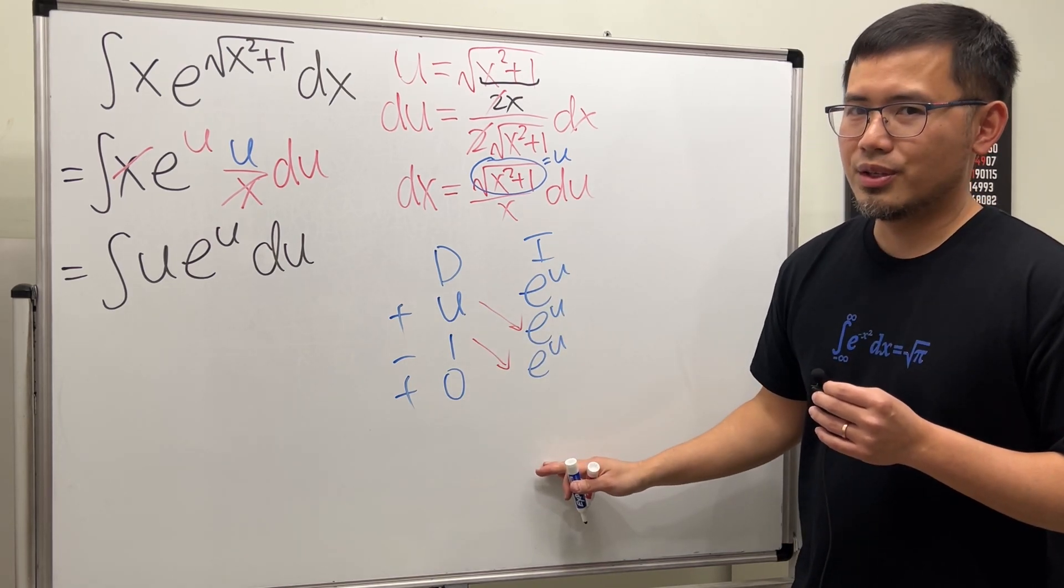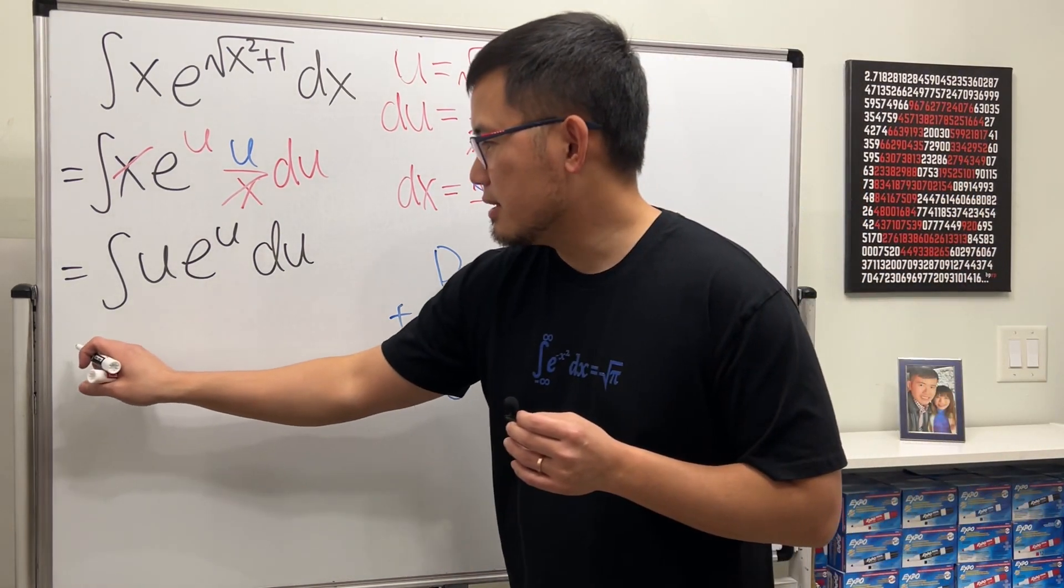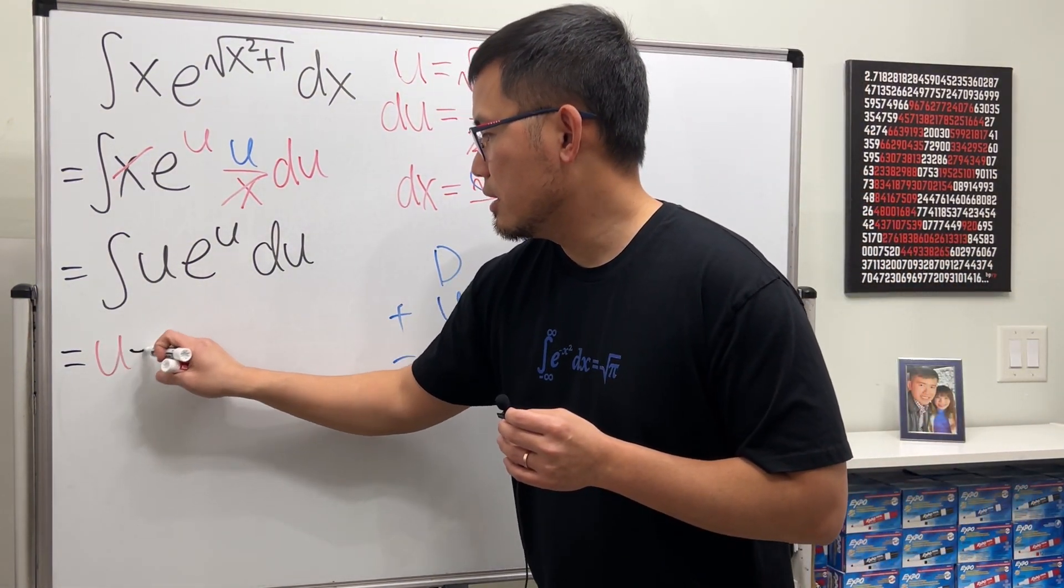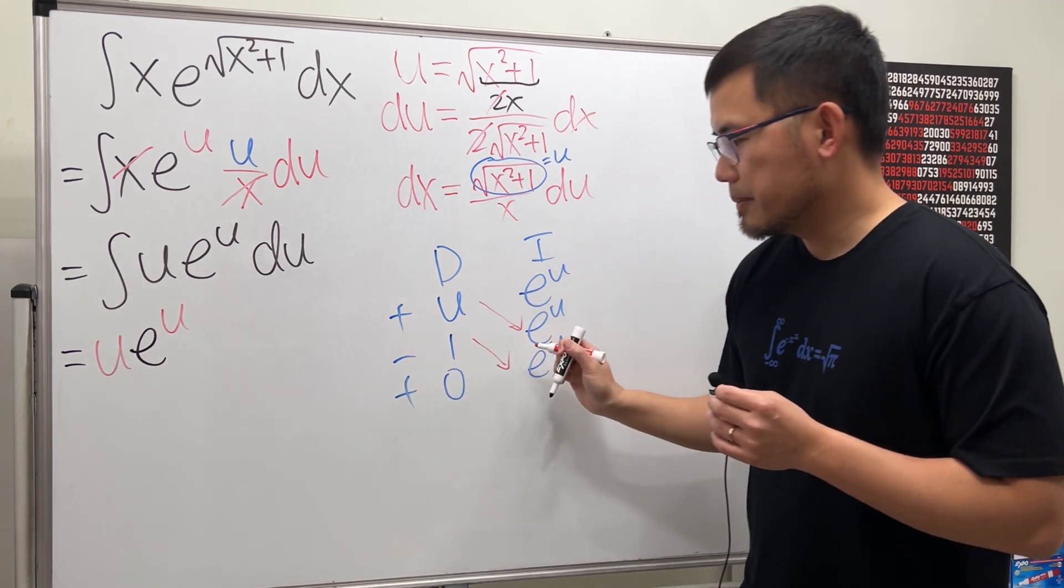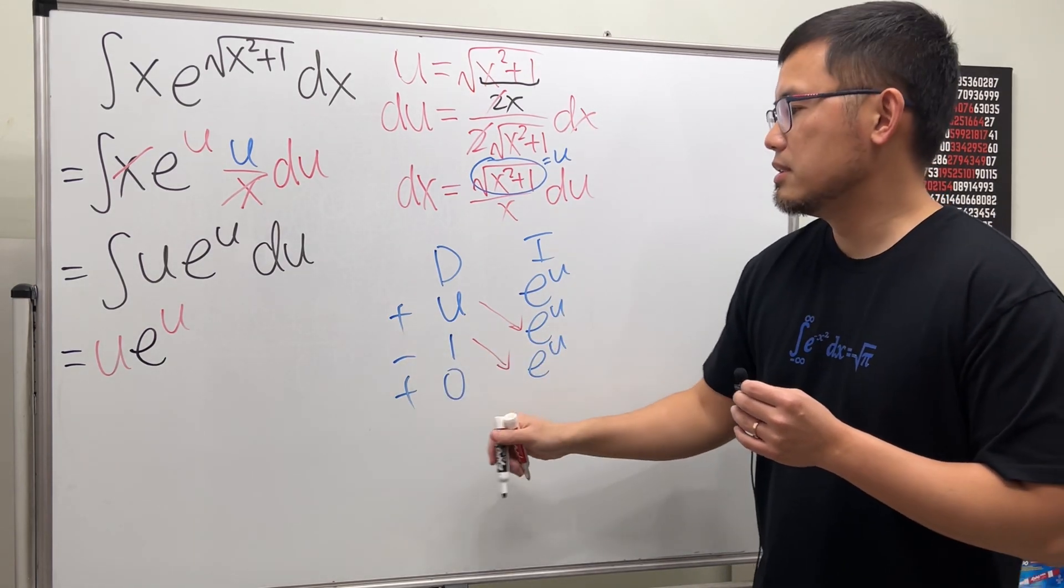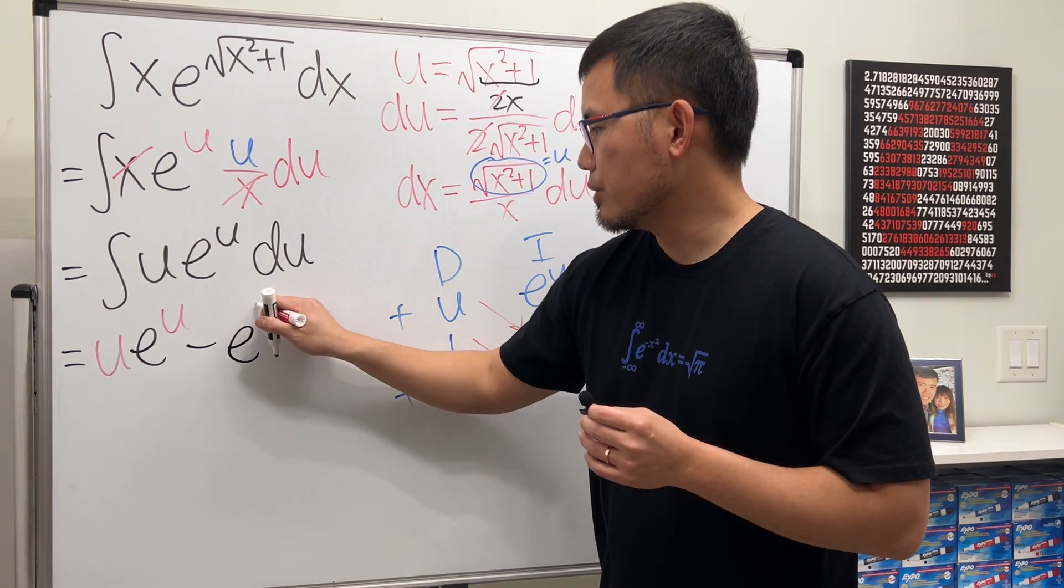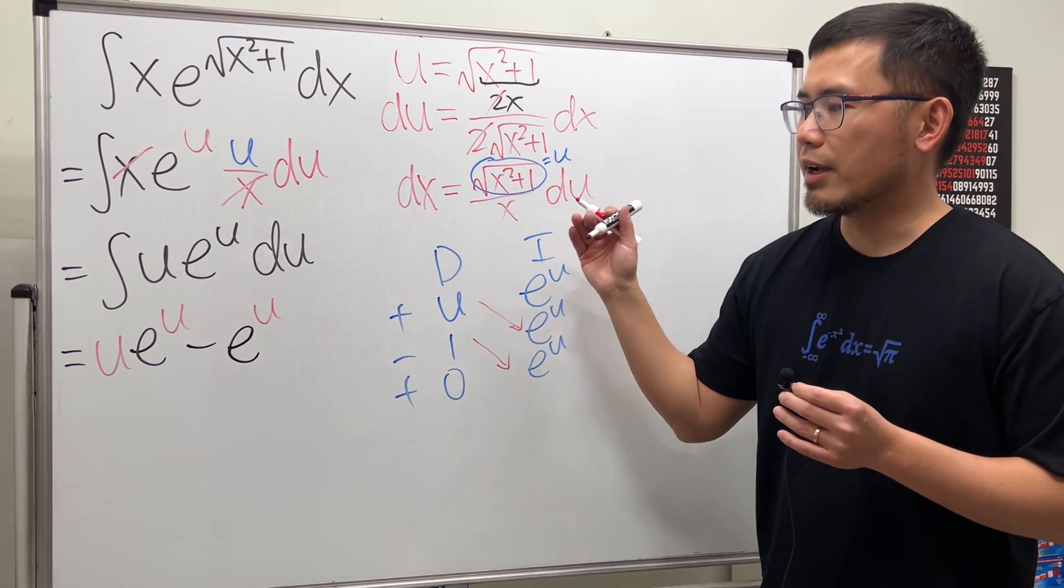So let's see, this is going to give us u times e to the u, and then minus this right, just e to the u, and we're pretty much done.